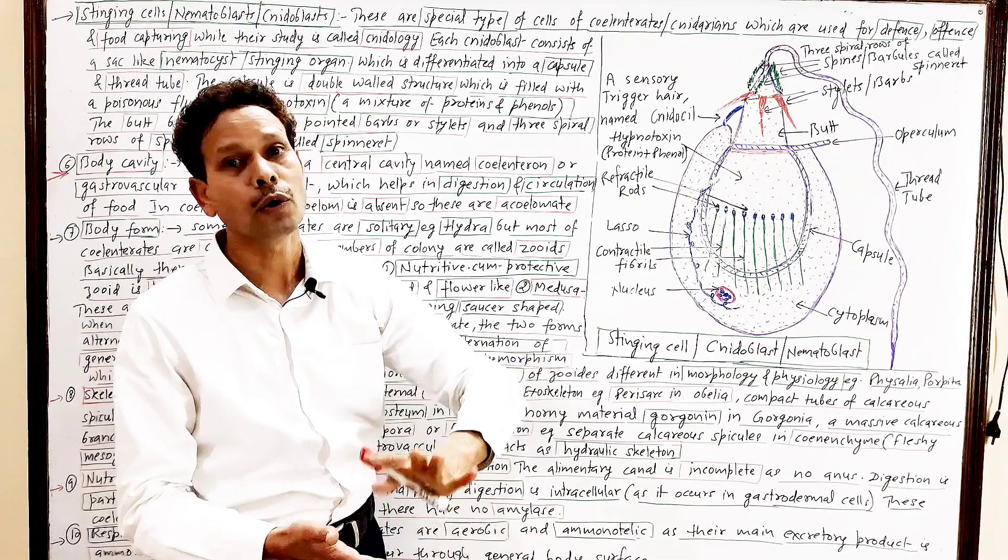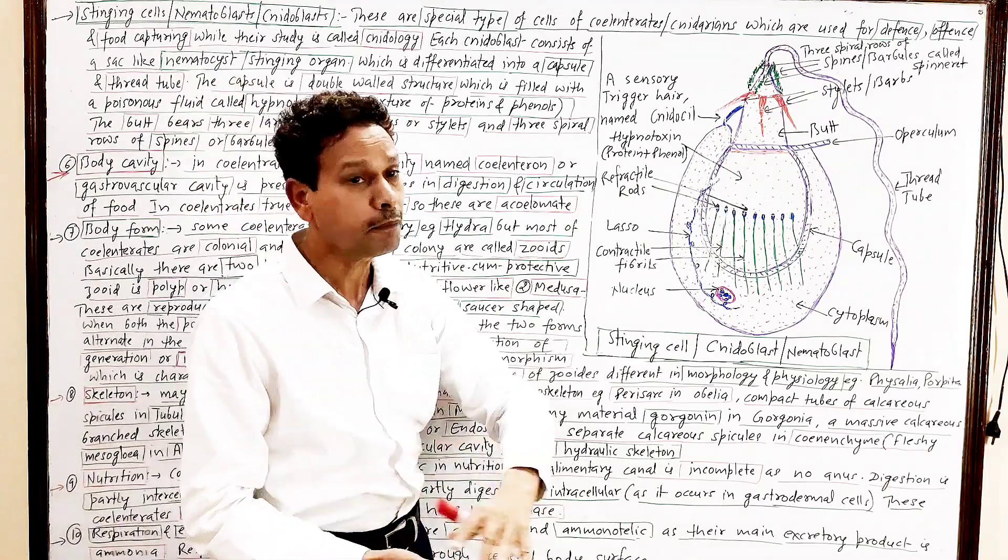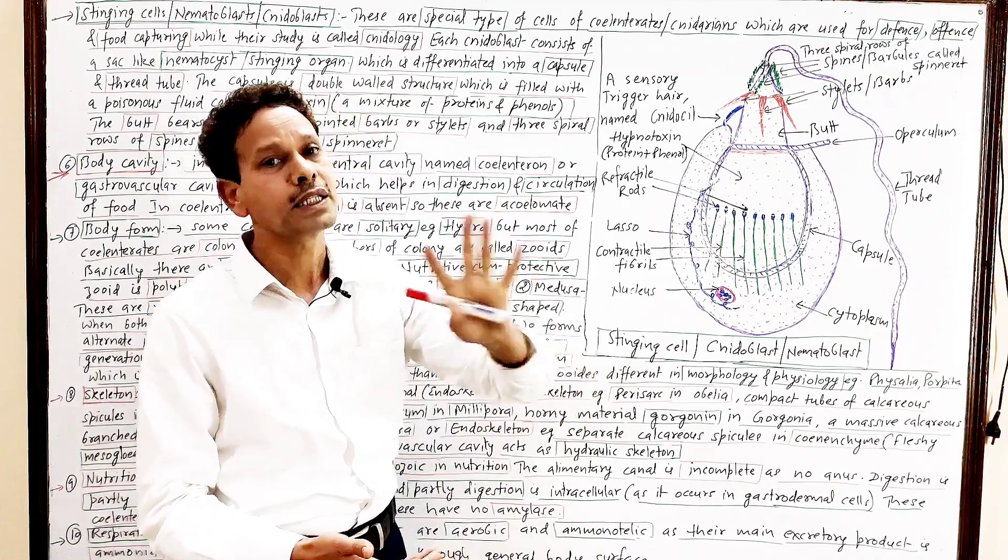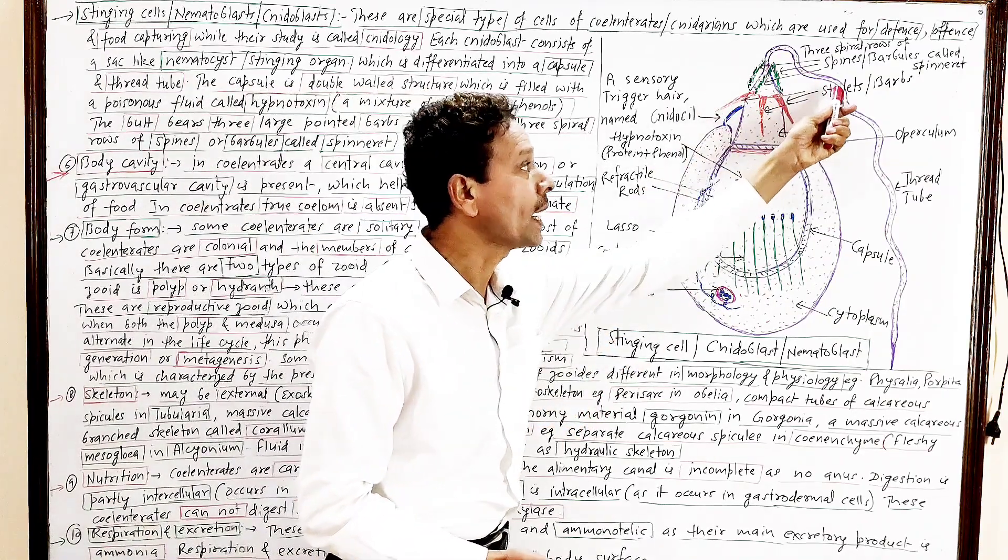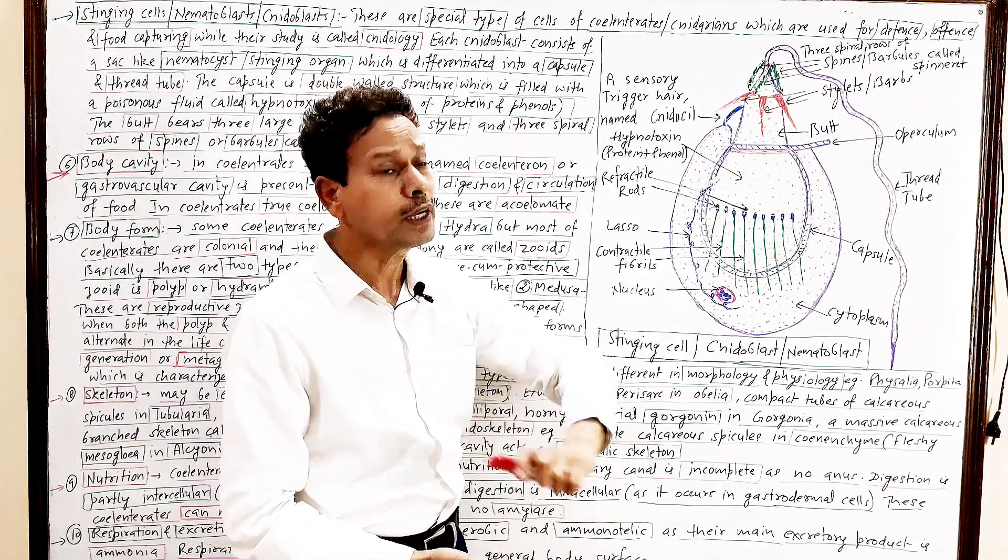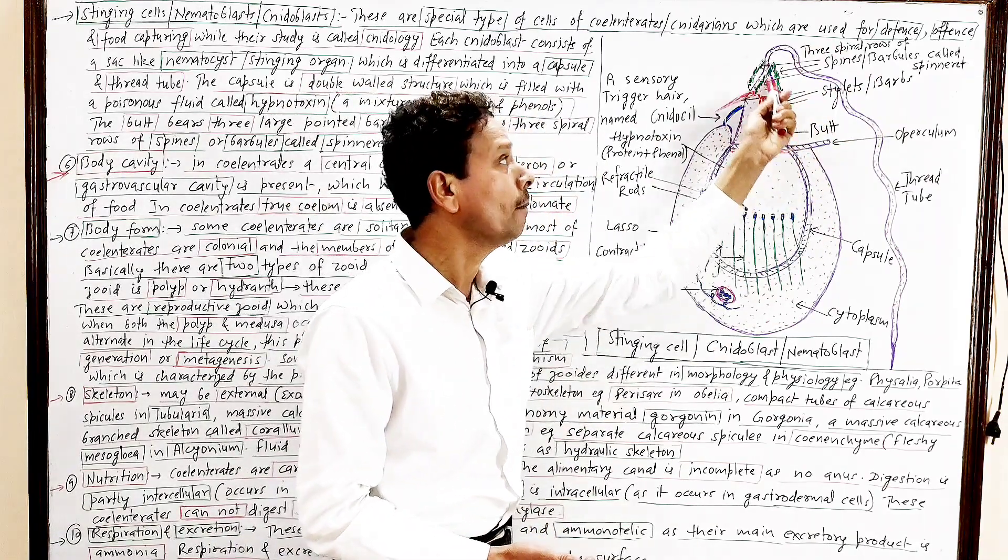And it possesses one, two, three needle-like structures. These are named styletes, or these are named barbs. As well as on this butt region, upper region.